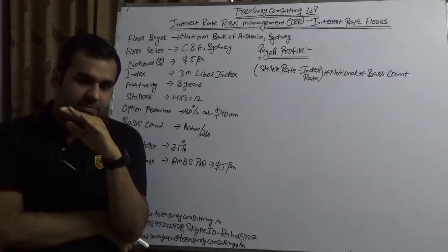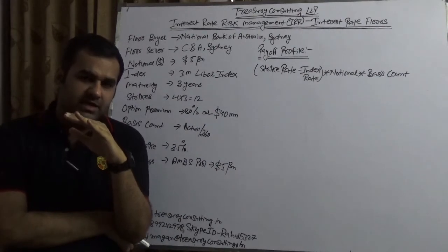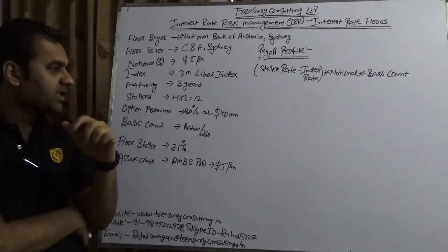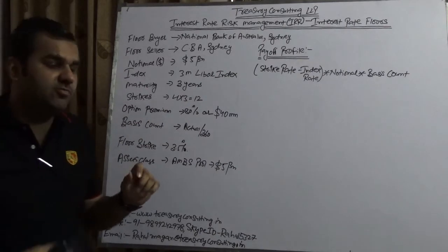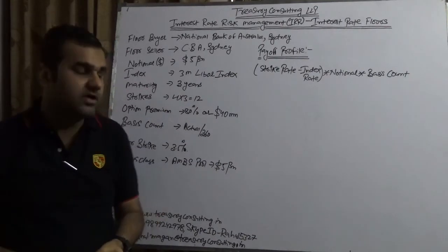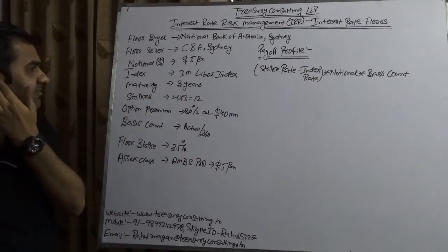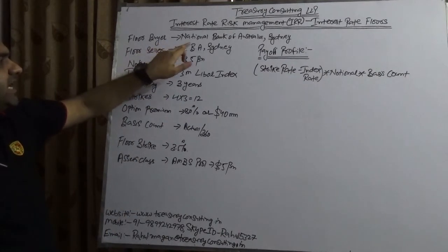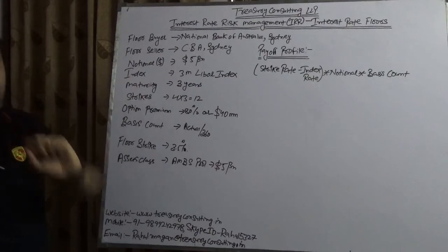Treat this particular floor on which the chair is lying as an interest rate floor. This is a very interesting concept. Before moving on, let me give you a small background. Here we have taken my favorite banks: the buyer is the National Bank of Australia, which is NAB, and the seller is CBA.